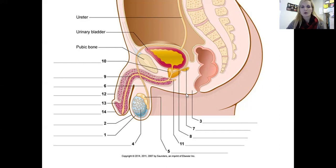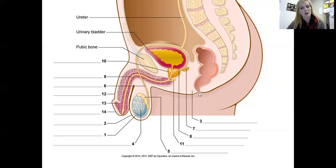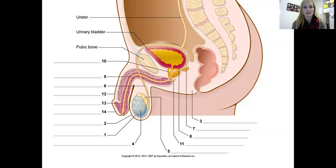Number three is pointing to the area between the scrotum and the anus — the anus being the endpoint of digestion. This is just an external area of skin between the scrotum and the anus, and that is called the perineum — P-E-R-I-N-E-U-M. We're actually going to see the same term given to the female area of skin between the vagina and the anus.